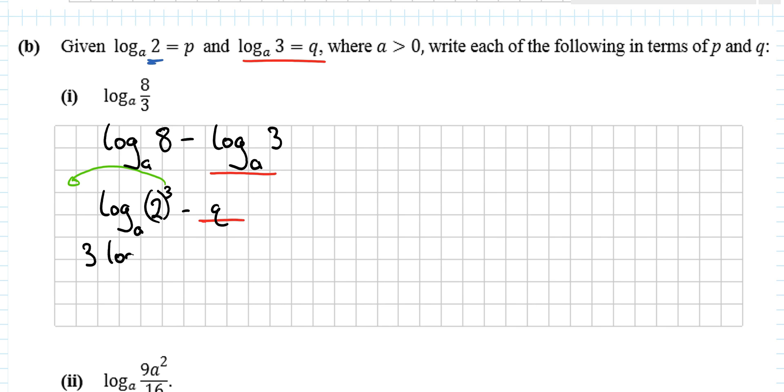So it's 3 log base a of 2 minus q. And now that's what was written up here. So I have 3p minus q. And that's the question done. It's written in terms of p and q.